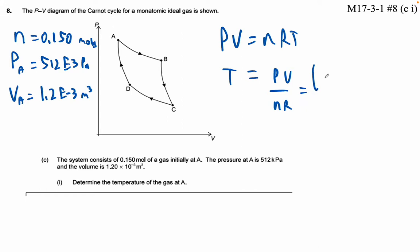So that's going to be 512E3, that's our 512 kilopascals, times 1.2E minus 3. N is 0.15, R is 8.31.